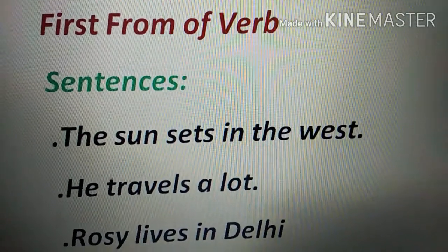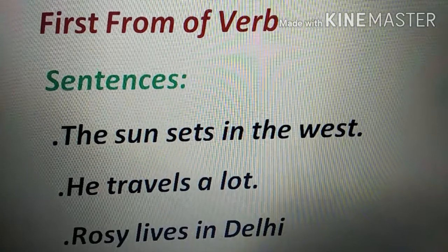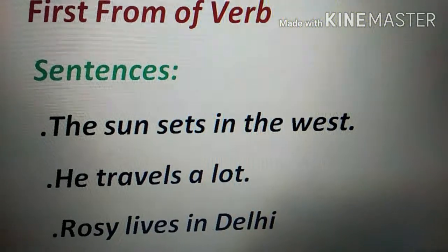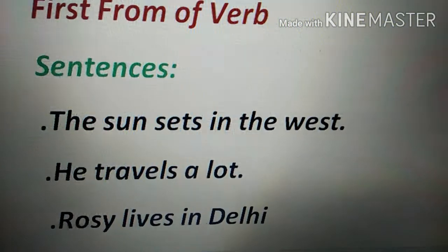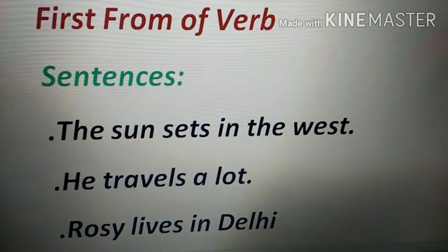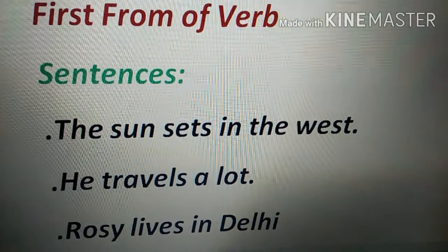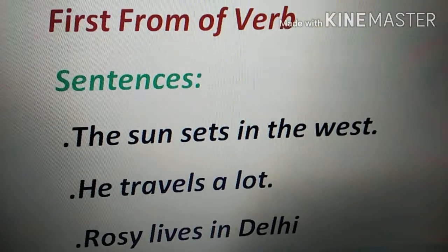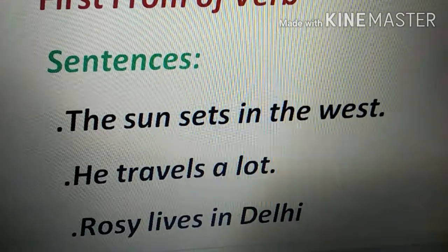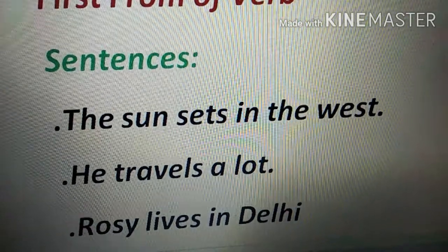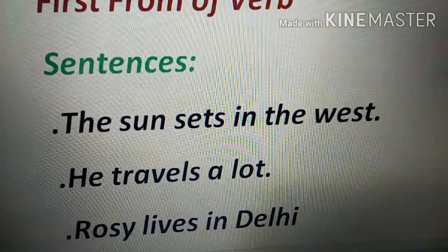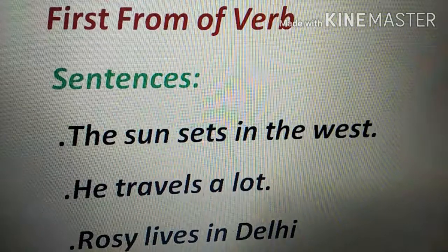Simple present tense is used to state facts and habits. For example: 'The sun sets in the west,' 'The sun rises in the east,' 'Honesty is the best policy.' These are facts. For habits and routine: 'He travels a lot,' 'Rosie lives in Delhi.' You will see that the first form of the verb is being used throughout these examples.